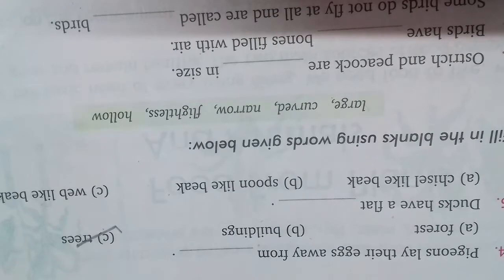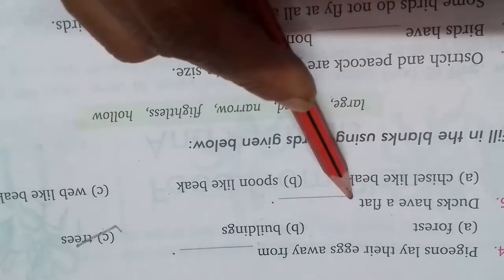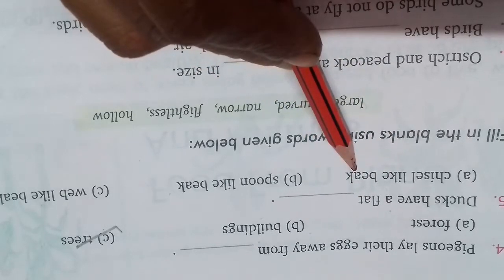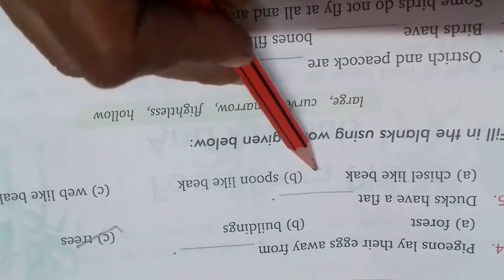Ducks have a flat chisel shaped beak... no, spoon like beak. Yes, ducks have spoon like beaks.